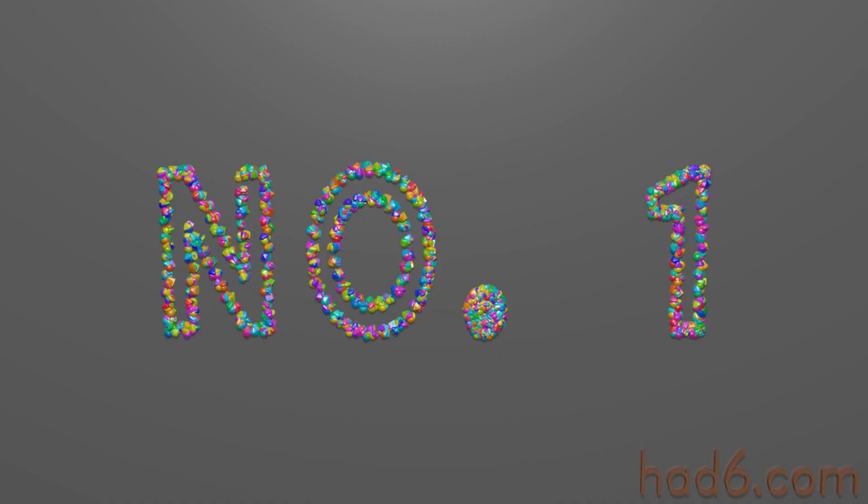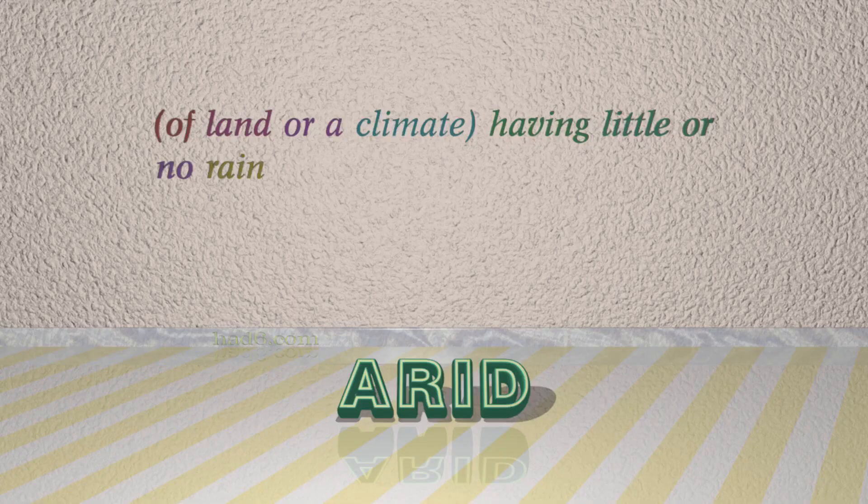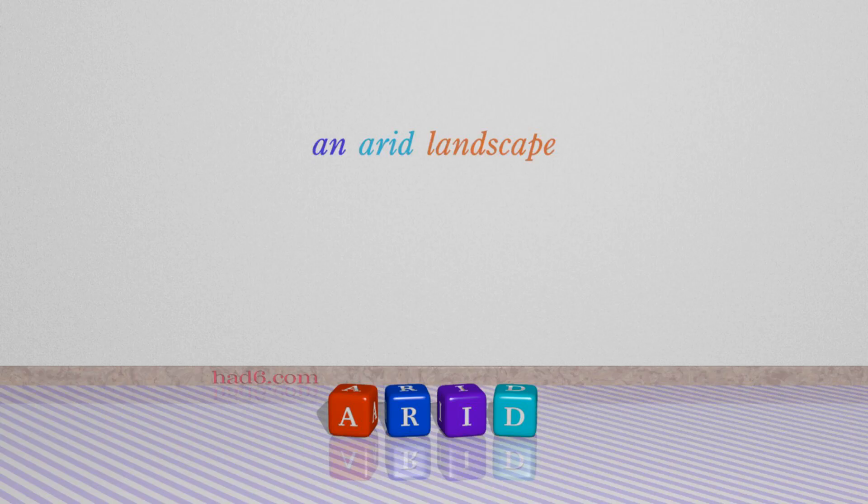Number 1: Arid, which means of land or a climate having little or no rain. For example: an arid landscape.